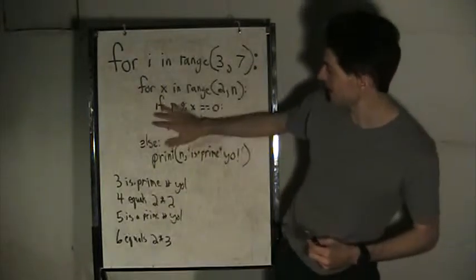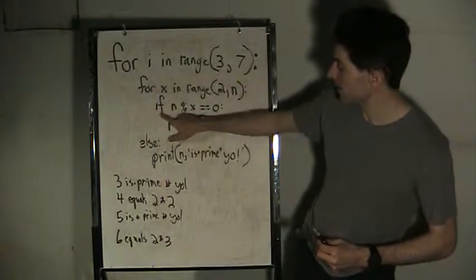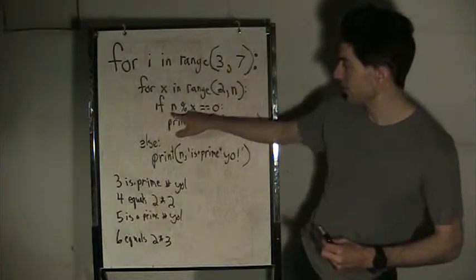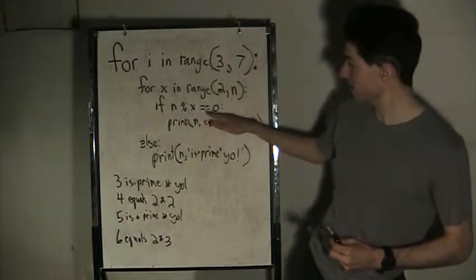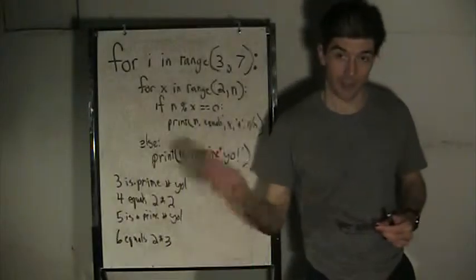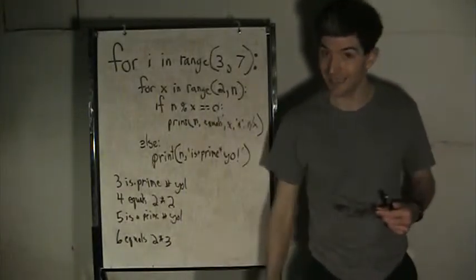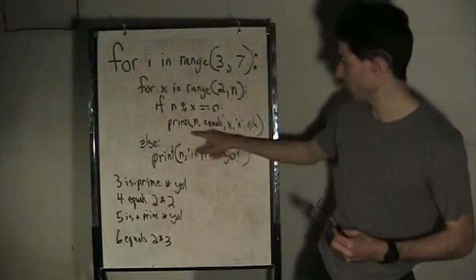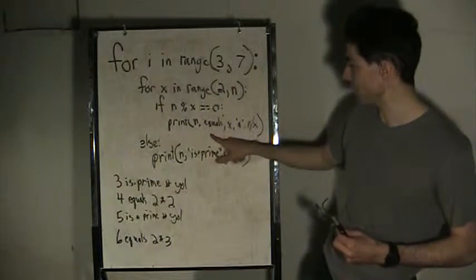If it has a remainder of zero for some value of x, that means it's divisible by something other than itself or one, which means it's not a prime. In which case it would print 'n equals that number times n divided by that number'. For example, with 4...